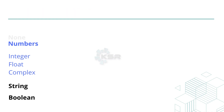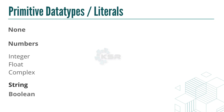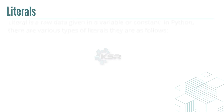Primitive data types — None, Numbers, String, and Boolean — are also called literals. At a higher level, primitive data types are also referred to as literals, which is another name for them.